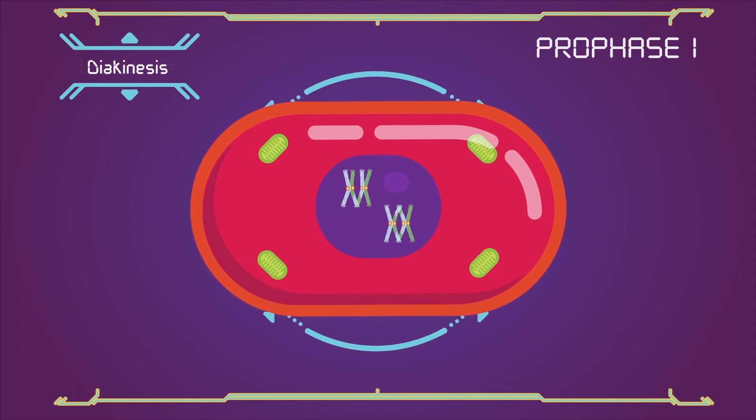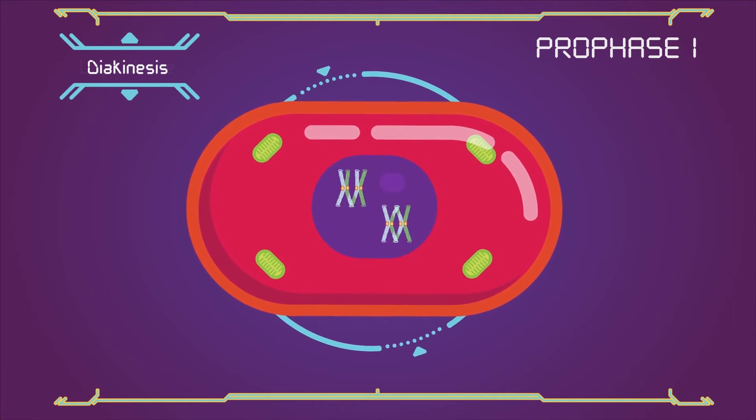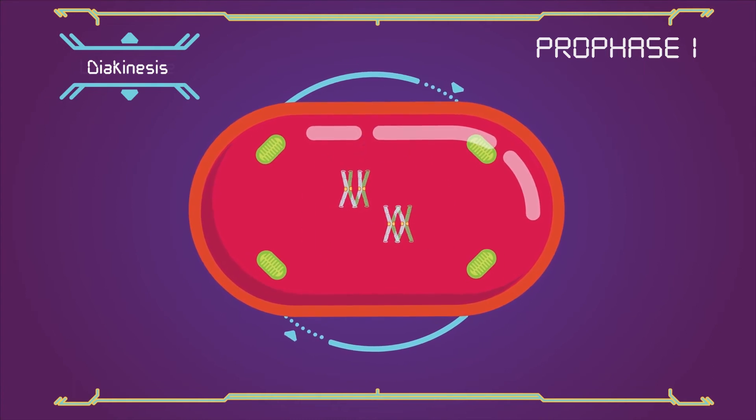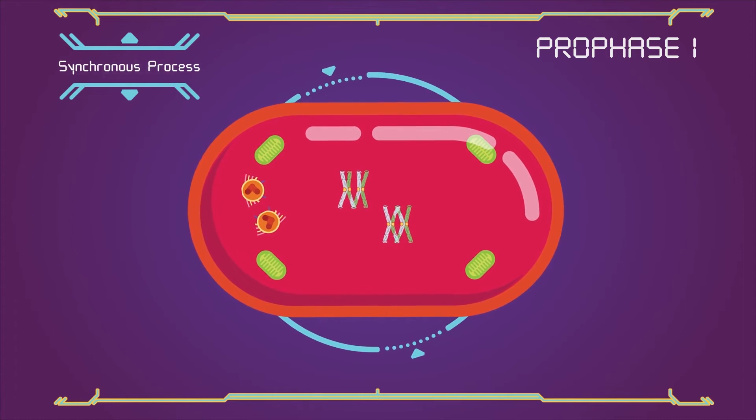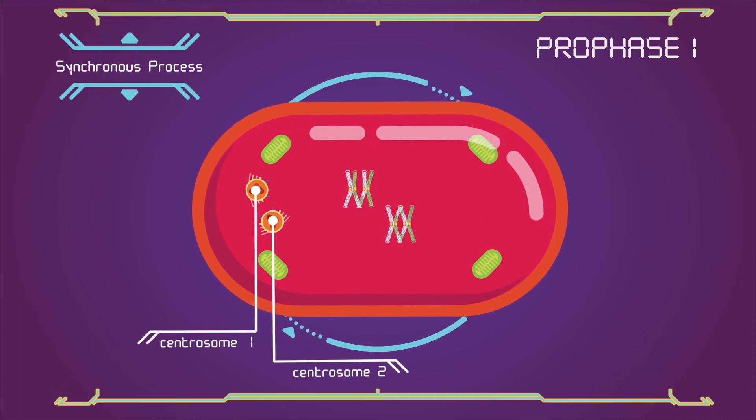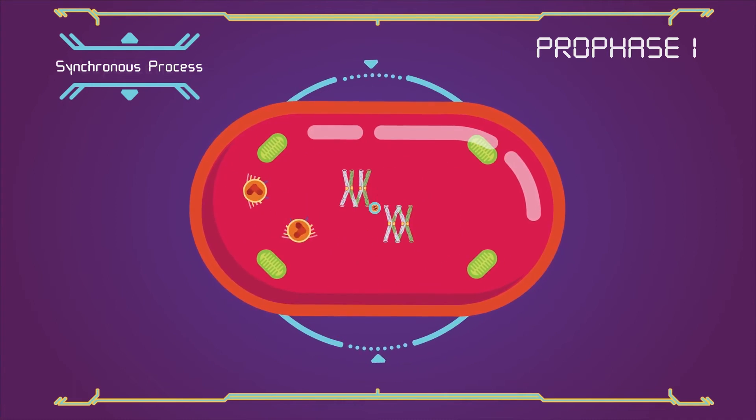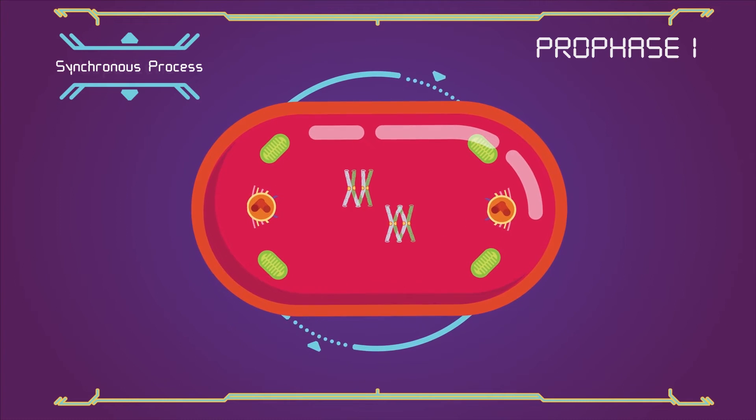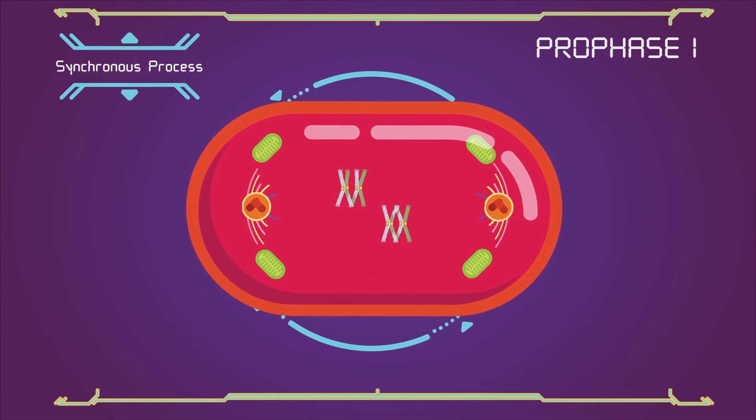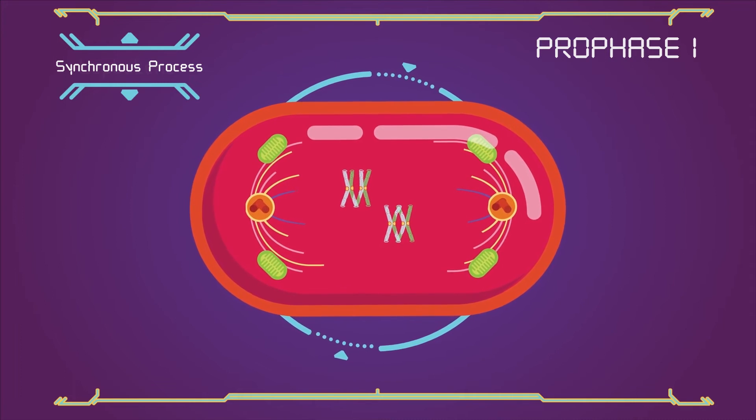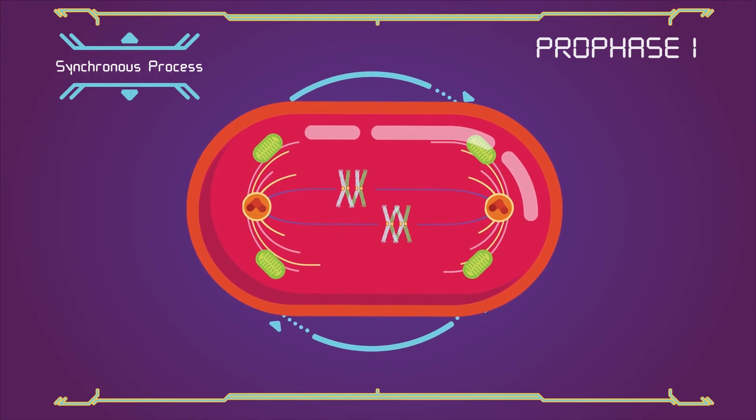Synchronous process: during these stages, two centrosomes containing a pair of centrioles (in animal cells) migrate to the two poles of the cell. The microtubules invade the nuclear region after the nuclear envelope disintegrates, attaching to the chromosomes at the kinetochore. The kinetochore functions as a motor, pulling the chromosomes along the attached microtubules.